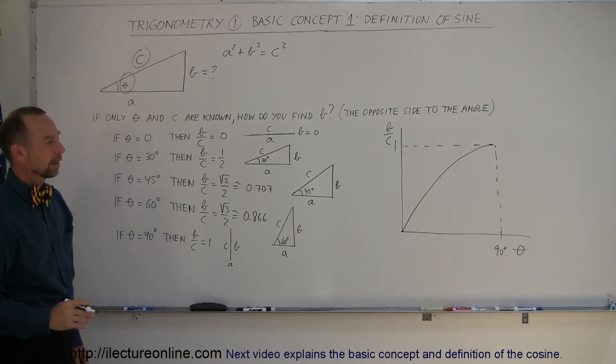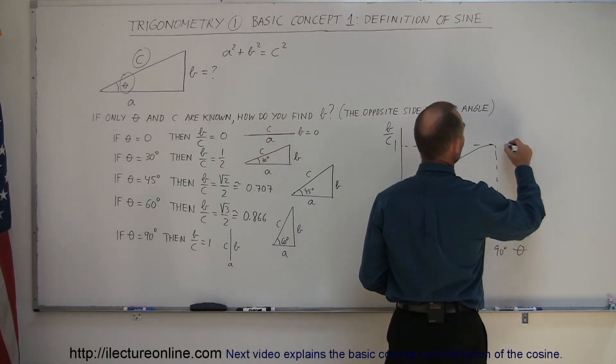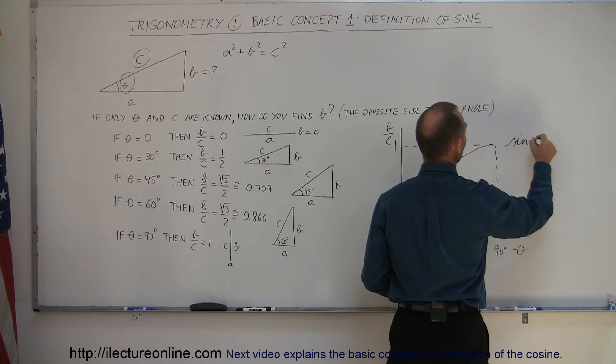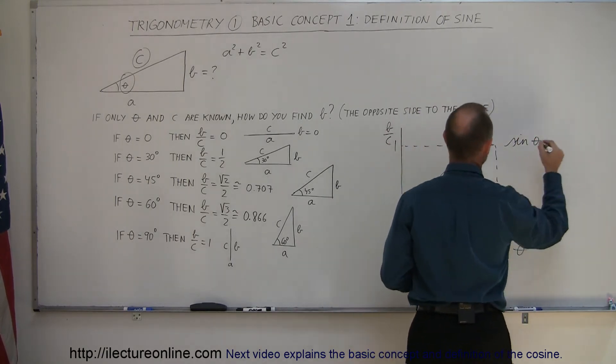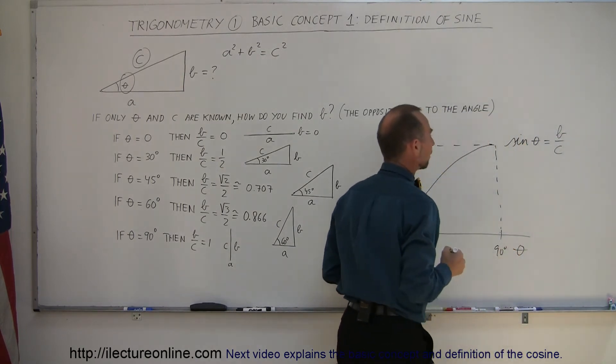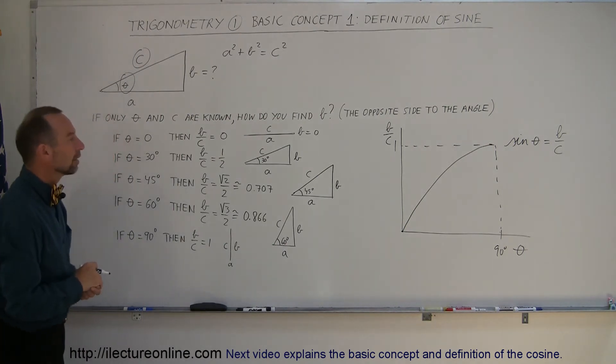What would we call that function? We came up with a function named the sine of the angle. By definition, the sine of the angle theta is equal to the opposite side over the hypotenuse. That's how we define the sine.